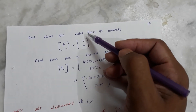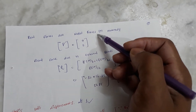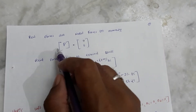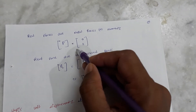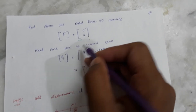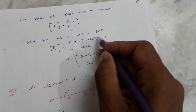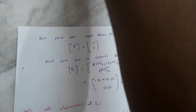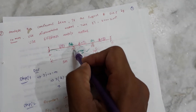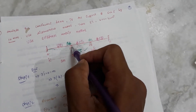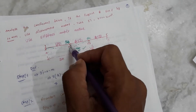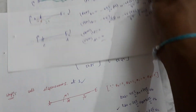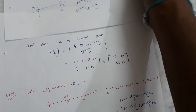Next, real forces due to nodal forces or nodal moments: since there are no applied nodal forces or moments, P equals zero for both coordinates. For real forces due to external loads, at coordinate 1 we have the sum of fixed-end moments of member B-A and member B-C, and at coordinate 2 we have the fixed-end moments at that node.